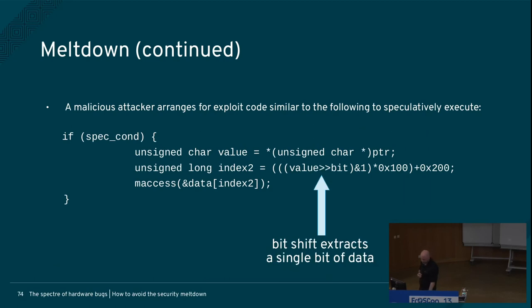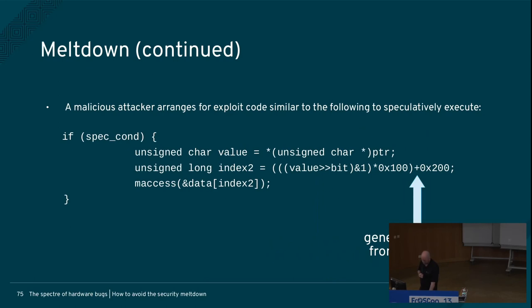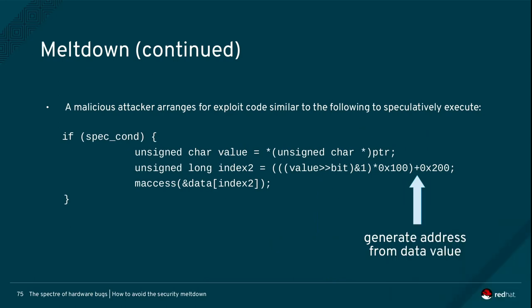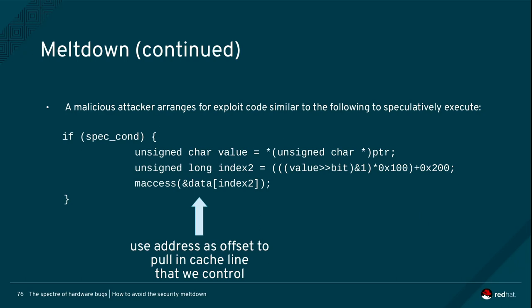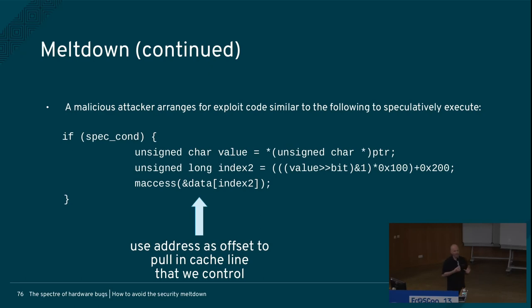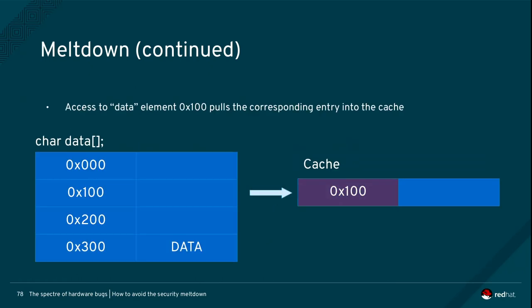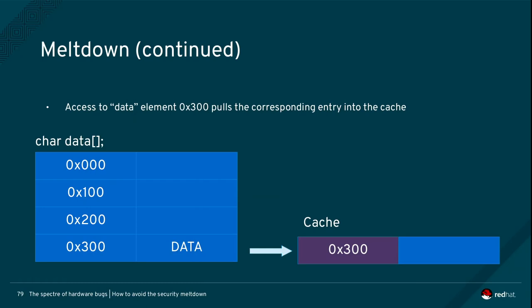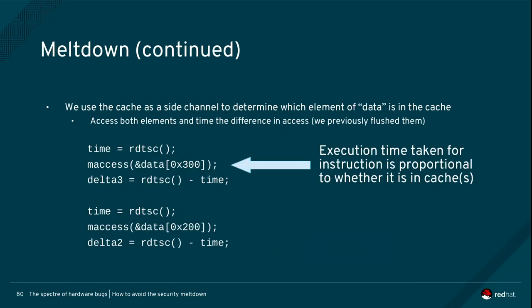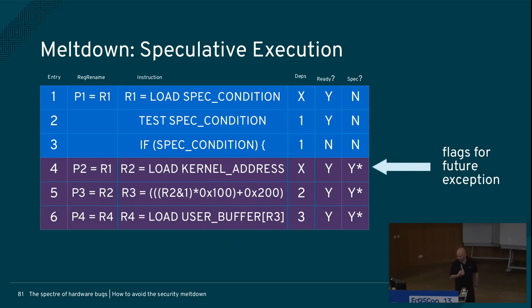If the next thing I do is touch some data I can measure, I can infer the value of that secret. So: I load a pointer I don't have access to, do some magic to create a reference to something I do have access to, then access the thing I do have access to legitimately — which pulls it into the cache. Which element gets pulled into the cache I can measure, and I can use that to reconstruct the thing I don't have access to. This is done using the timing attack: I read the timestamp counter, access something, measure how long that took.